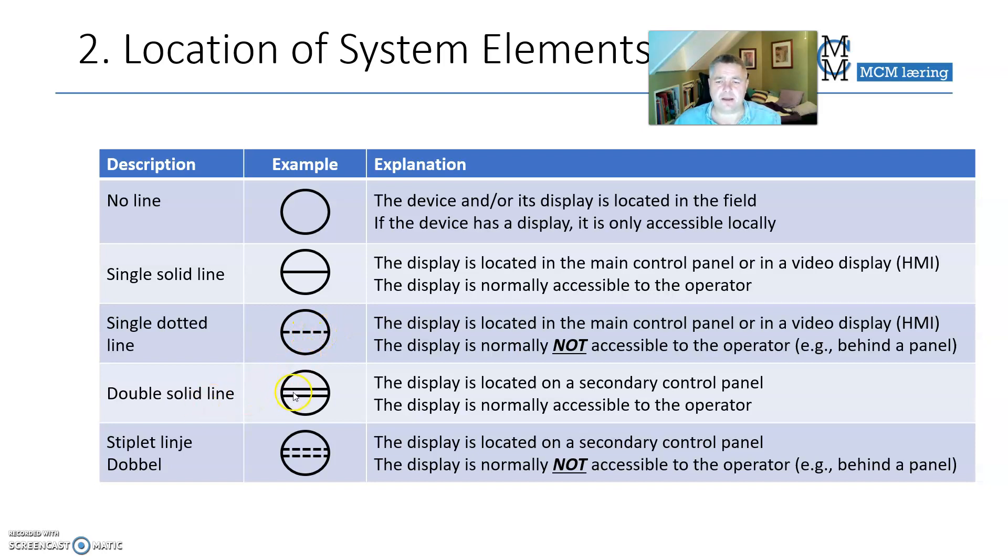A double line, that's on a secondary control panel. You could have, for example, on a ship, one control panel in the engine room and one control panel at the bridge. The stippled dotted line means that it's in the secondary location, not usually accessible, but behind the panel.